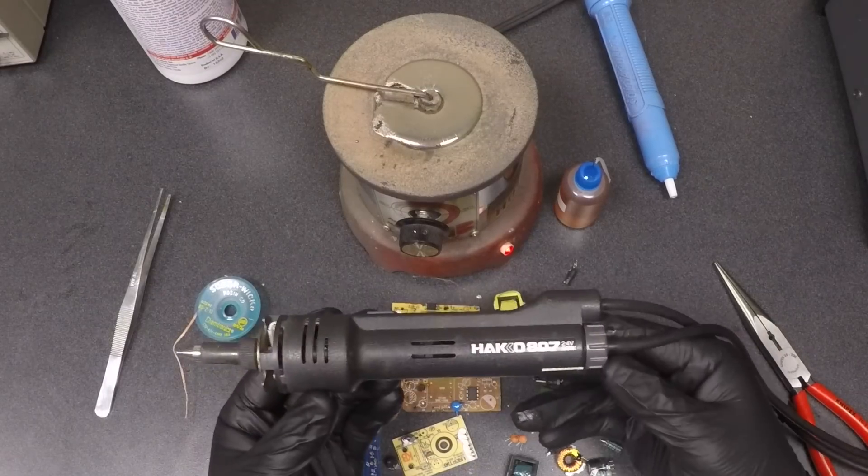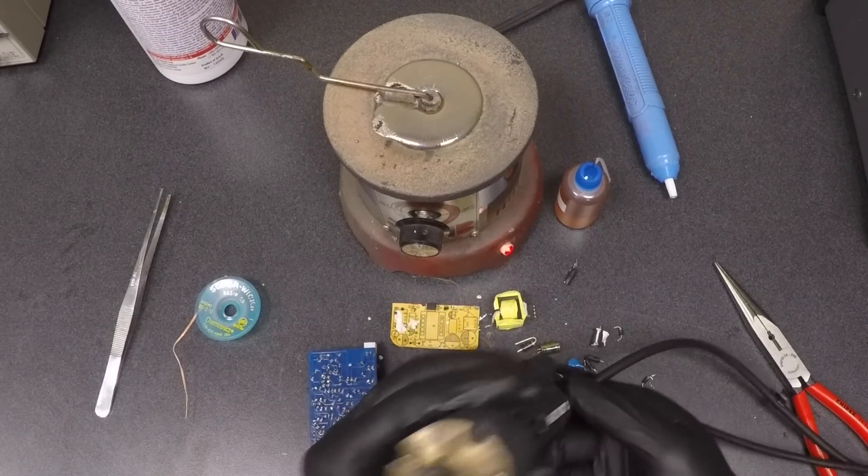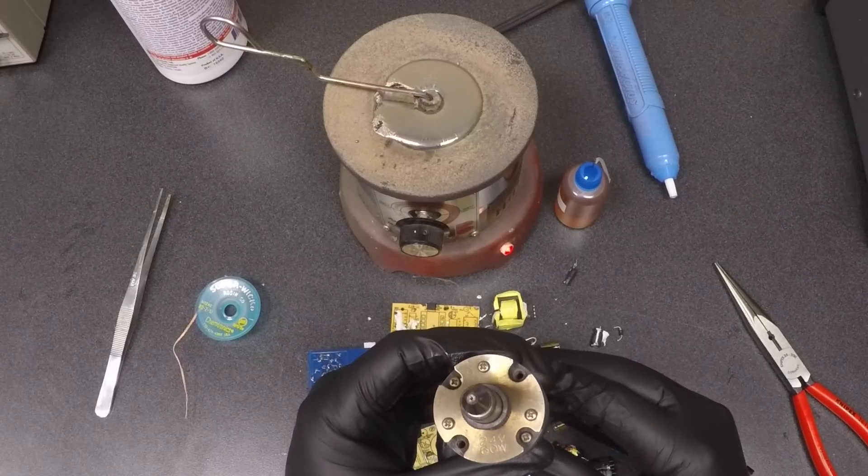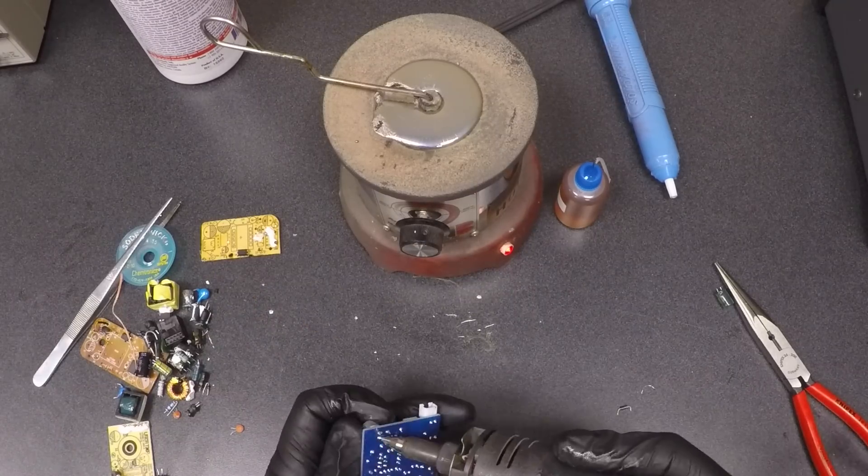If you repair a lot of boards, then I suggest using a desoldering machine like this one. It's basically a soldering iron with a connected vacuum pump that sucks up all the solder. This machine saves a lot of time on repairing boards and is really easy to use.